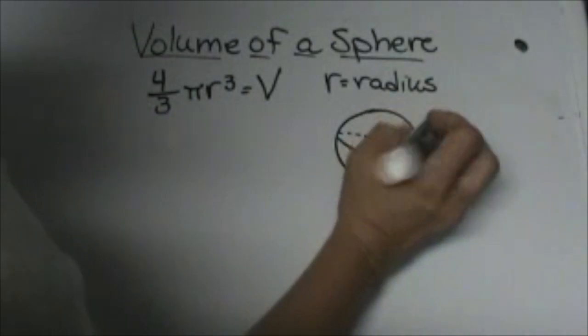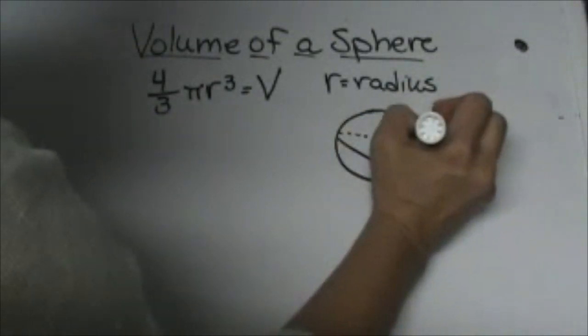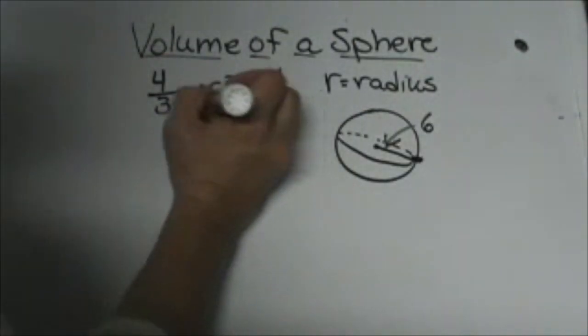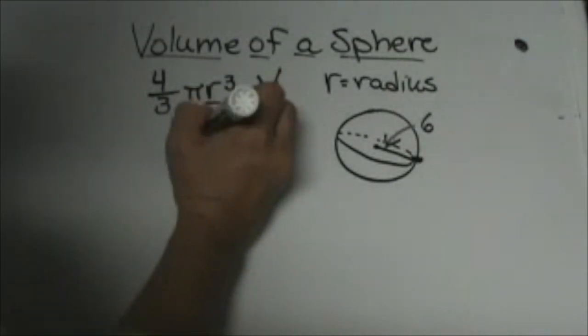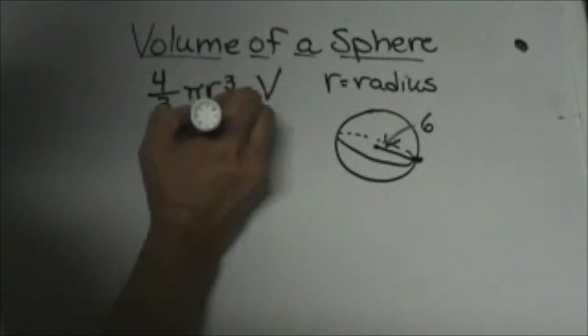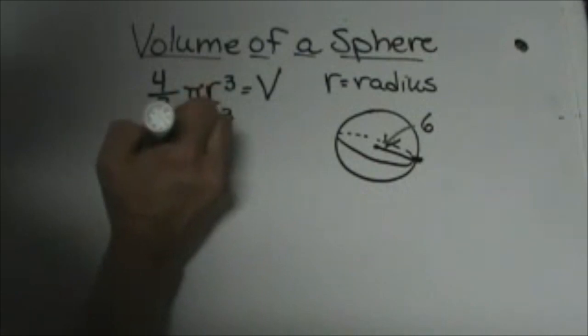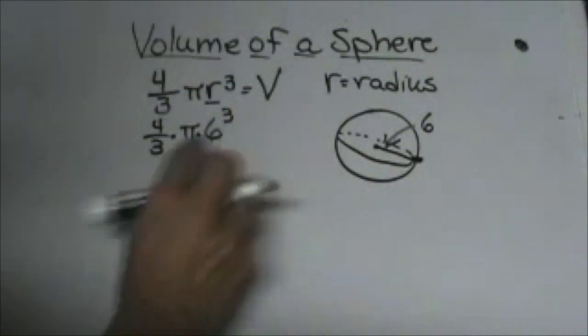Let's give ourselves a radius of 6. If the radius is 6, I'm going to plug in 6 here and cube it. I'm going to take 4 thirds times pi times 6 cubed.